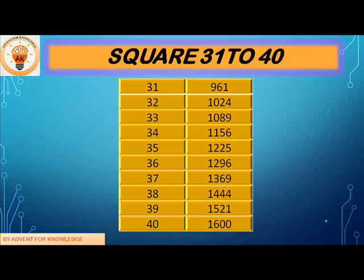Now let's begin the sequence again. 31 square is 961, 32 square is 1024, 33 square is 1089, 34 square is 1156, 35 square is 1225, 36 square is 1296, 37 square is 1369, 38 square is 1444, 39 square is 1521, 40 square is 1600.